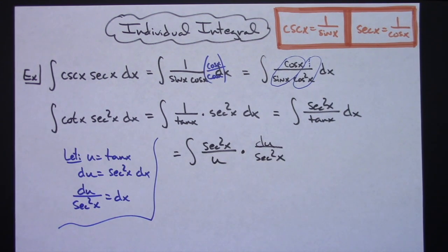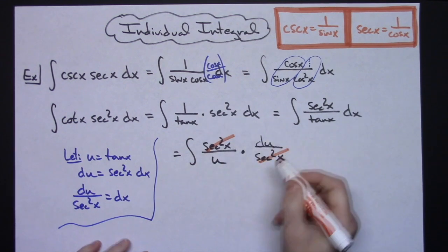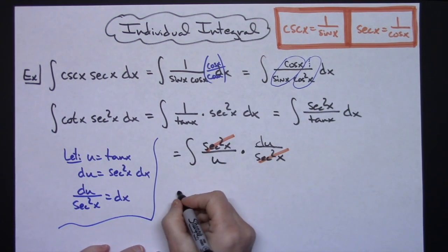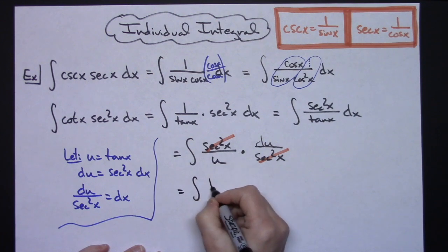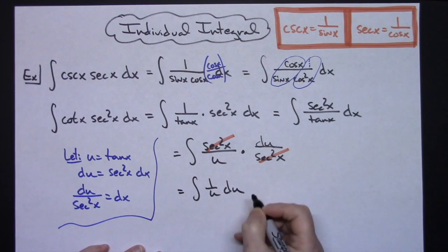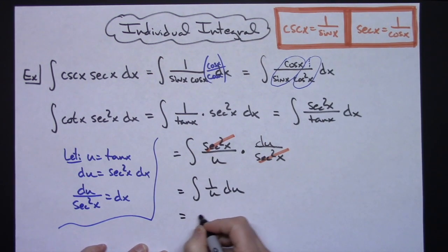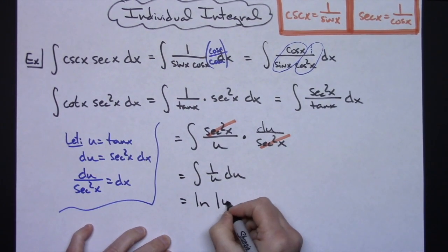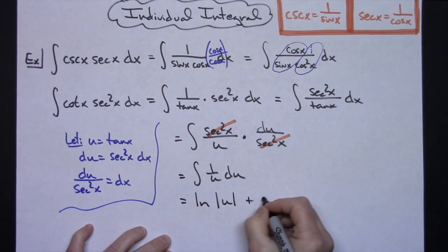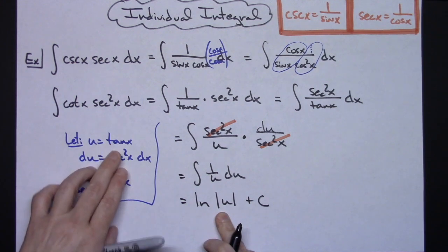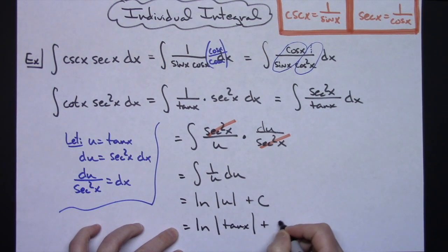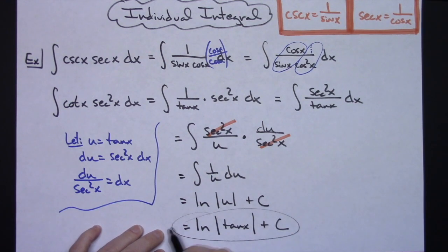Everything works out nicely because those secant squared x's cross out, leaving the integral of 1 over u du. We know how to integrate that — it'll be natural log. So we'll have natural log of the absolute value of u plus c, and since u was tangent, the final answer is natural log of the absolute value of tangent x plus c.